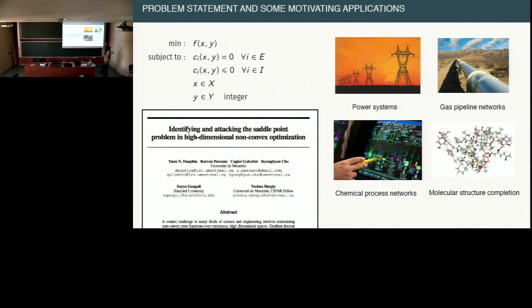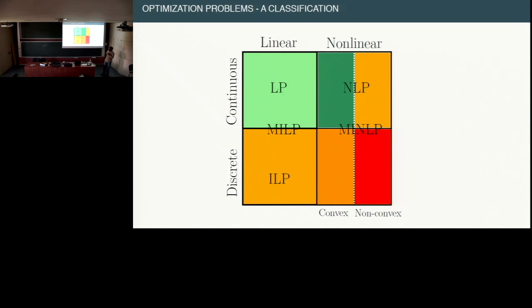In Los Alamos we have been mostly focusing on power systems and gas pipeline networks, and also some machine learning problems in our group. That was also partly the motivation why we started looking at these problems. Here is a quick classification of problems — the reason I included this figure was to demonstrate the intuition for why we started looking at this approach.